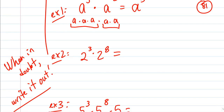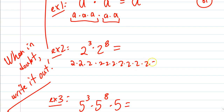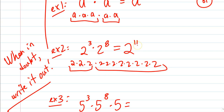Take 2 to the third and 2 to the eighth. I'm telling you, don't just have the rule — understand it. Do you have to write out all of them? No. But if you aren't sure, write it out. 2 to the third would be three 2's; 2 to the eighth would be eight 2's. So I've got three of them and eight more — that gives me 2 to the eleventh. No doubt in my mind. When in doubt, write it out.